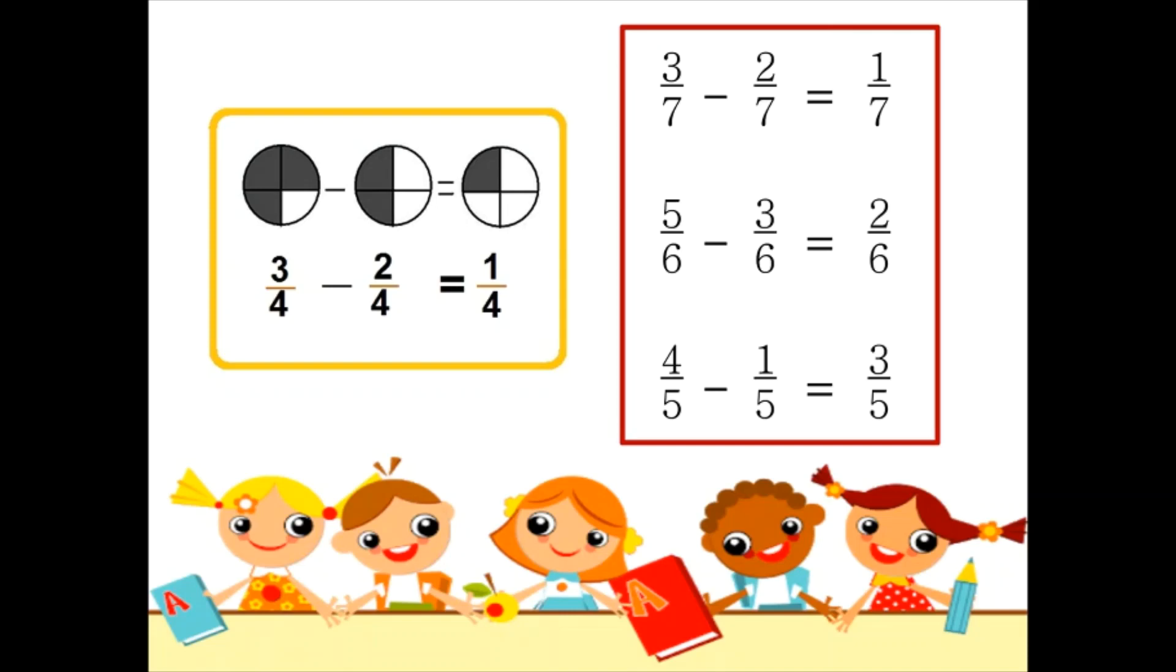5 by 6 minus 3 by 6. We will subtract 5 and 3 which is 2 and write 6 as the denominator.